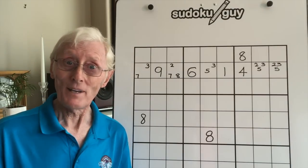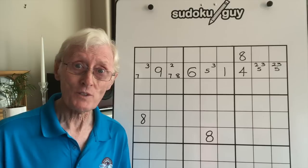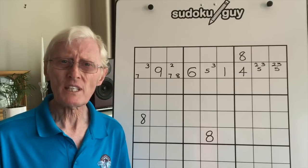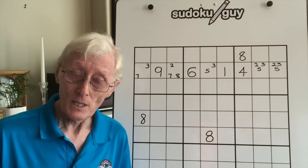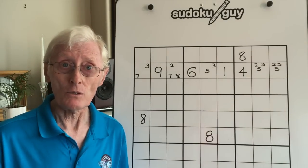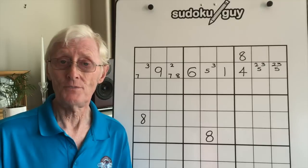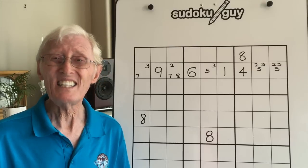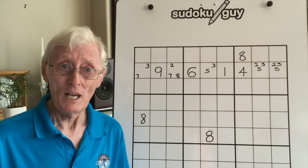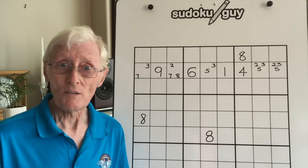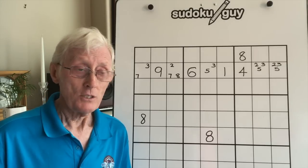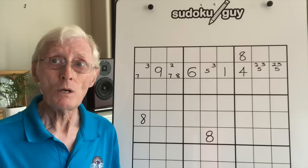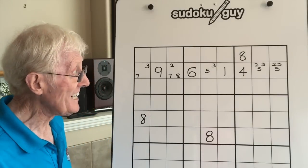Hi everybody, here we are again. Robin the Sudoku guy with yet another tutorial. Before I show you Tutorial 41, I want to say a few words about Tutorial 40. If you look underneath all my videos, I make a comment about the video. In Tutorial 40, I talk about how easy it is to miss something — it's a matter of when you spot something and what you spot. In that last tutorial, Jim W let me know that there was in fact a naked triple.